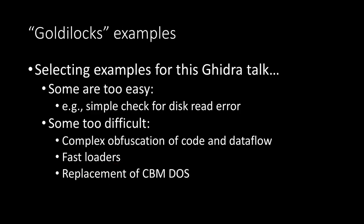For this talk, I wanted to get some Goldilocks examples — not too easy, like a simple check for a disk read error, but certainly not too difficult. Wow, there's a lot of difficult stuff out there. People were really clever back in the day — complex obfuscation using exact cycle timings from IO chips and disk drives, custom P-code, illegal instructions, stack-based languages like Forth, or complex flow controls based on interrupts or stack manipulations. There are all kinds of variations.